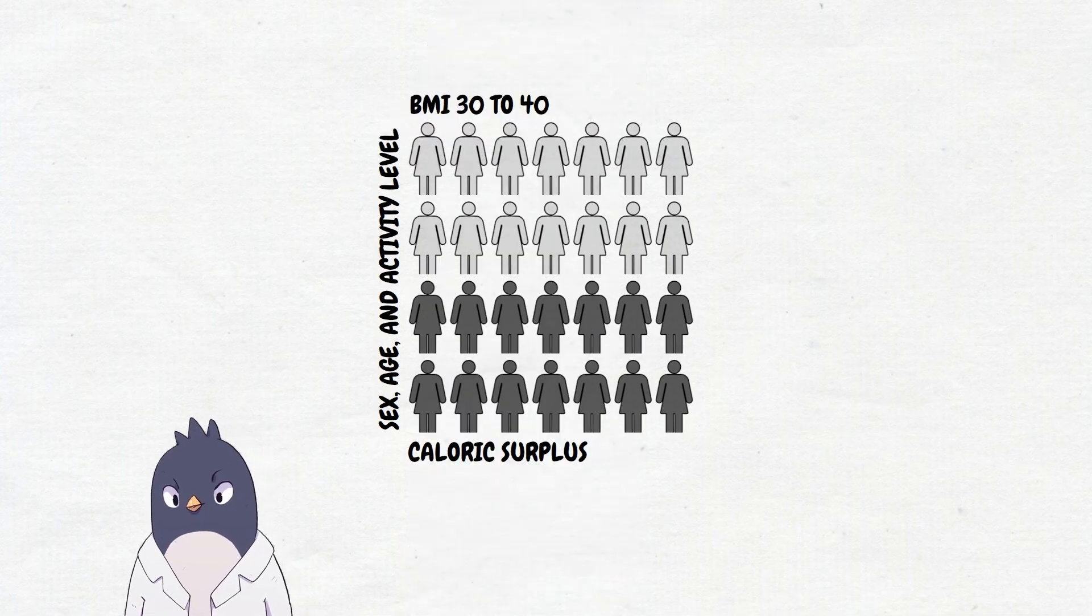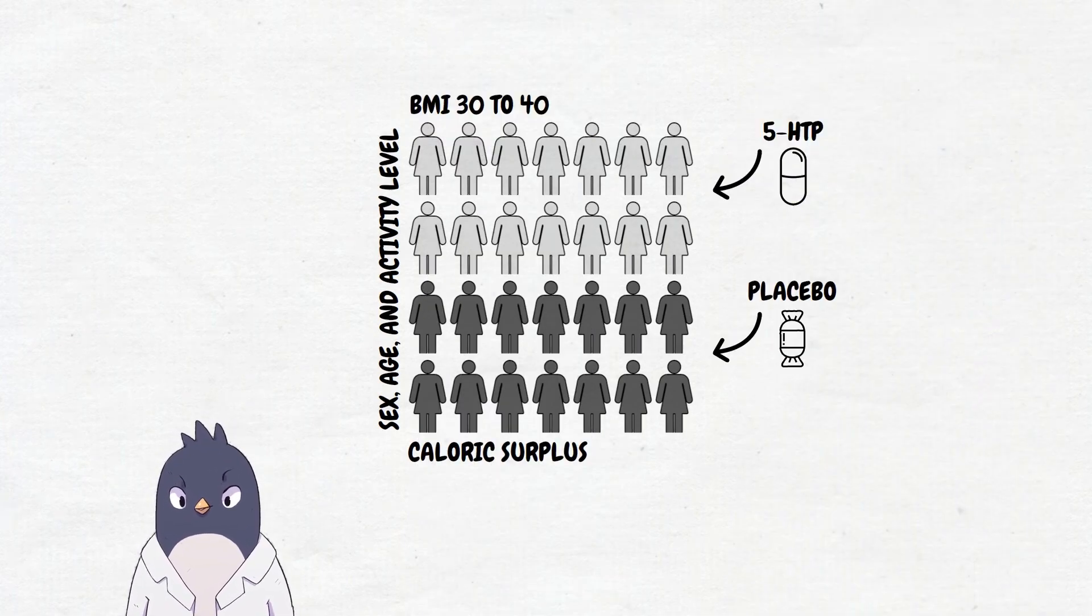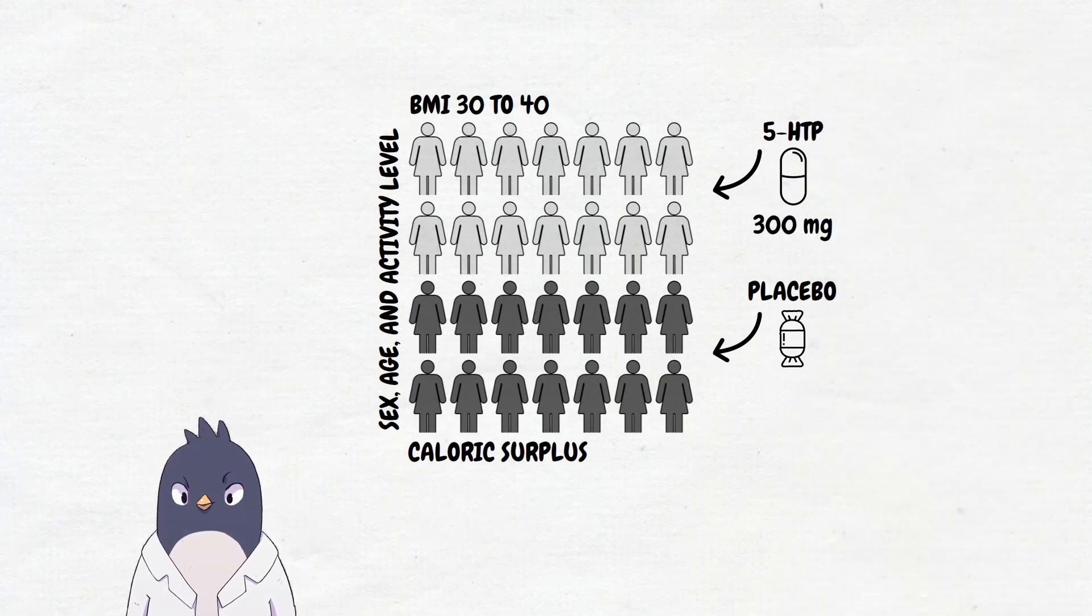They were randomized to take 5-HTP or placebo capsules for 12 weeks. The 5-HTP was dosed as 300 mg three times daily and was taken 30 minutes before each meal.